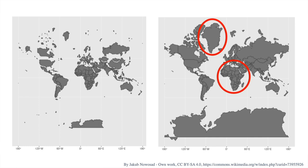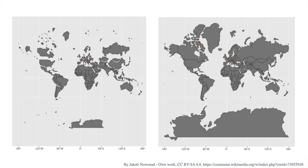Greenland, for example, looks as big as Africa, even though it is in fact 14 times smaller. And you can never see the north or south pole. We will talk more about map projections in one of our next videos.